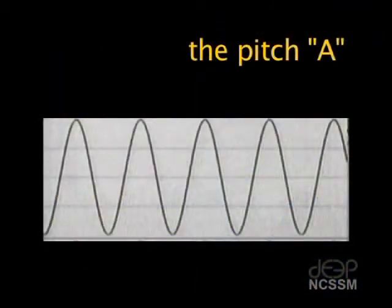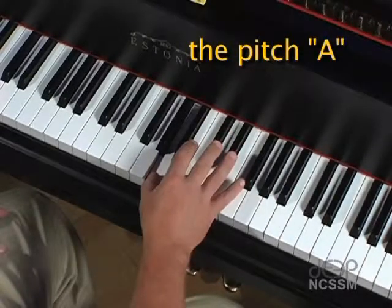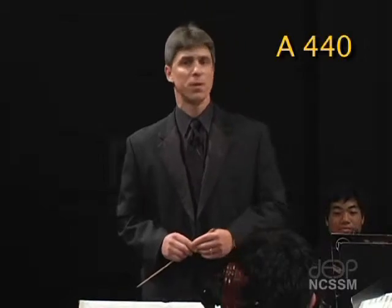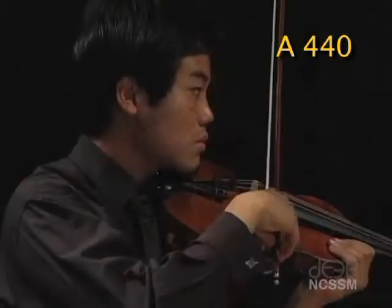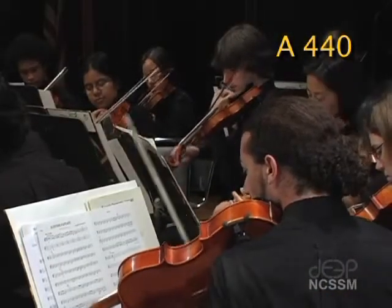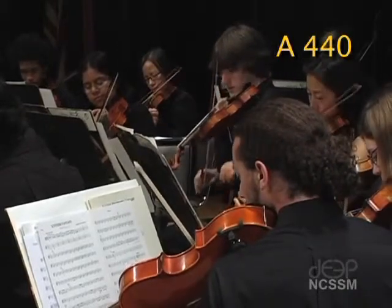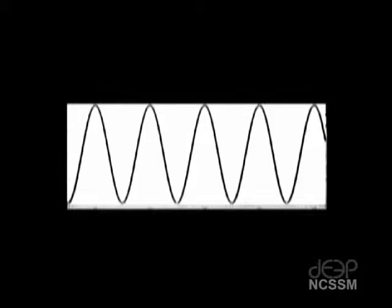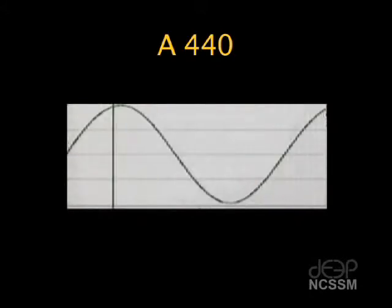Let's dig a little deeper and look at a diagram of a sound wave. This is a diagram of the pitch A — the A above middle C on the piano. It is also the pitch that an orchestra traditionally uses to tune its instruments. Orchestras around the world tune their instruments to the pitch A, also often referred to as A440. 440 is the number we're interested in today. To unlock the secret of the number 440, let's go back to a diagram of a sound wave. This diagram represents the pitch created by a violin playing the tuning note A440. In order to unlock the secrets of the diagram, we must zoom in on the wave, just as if we were looking at it under a microscope.